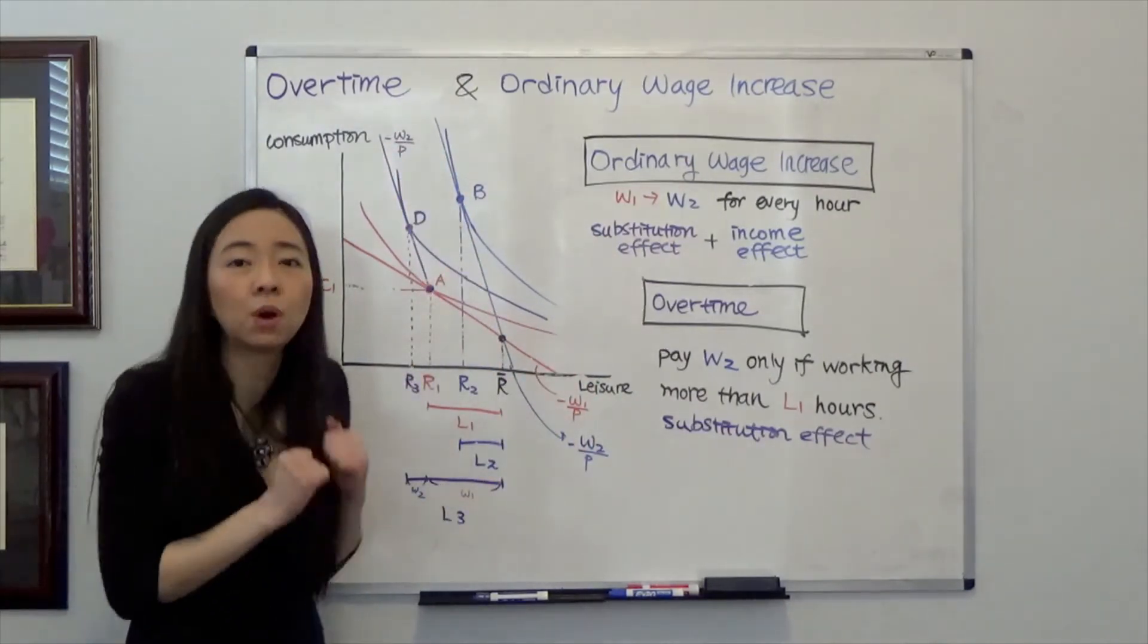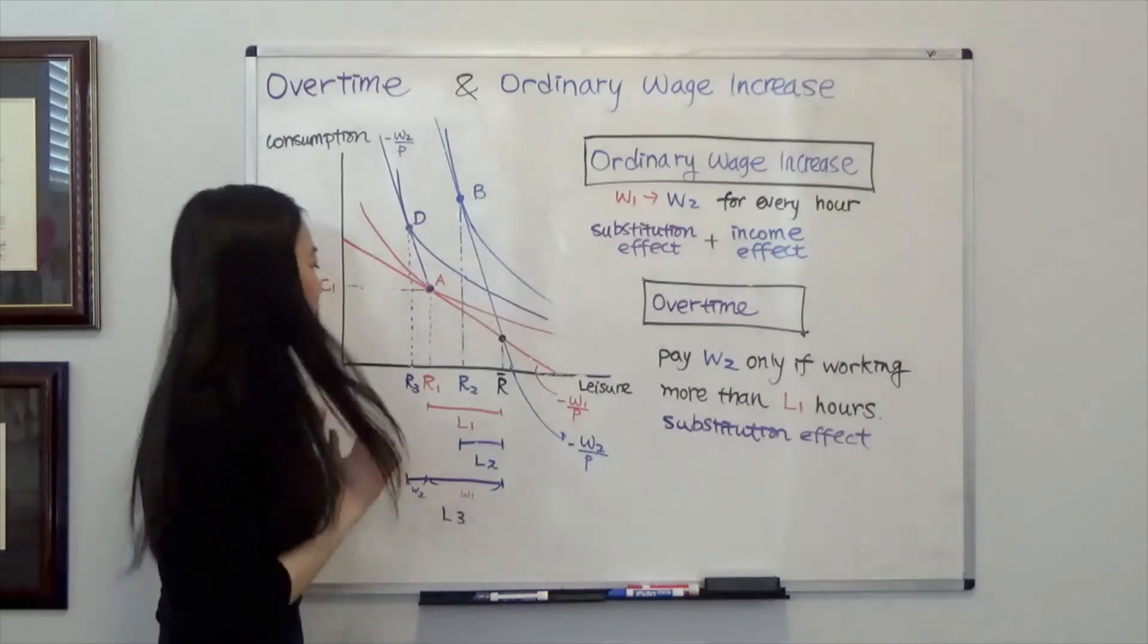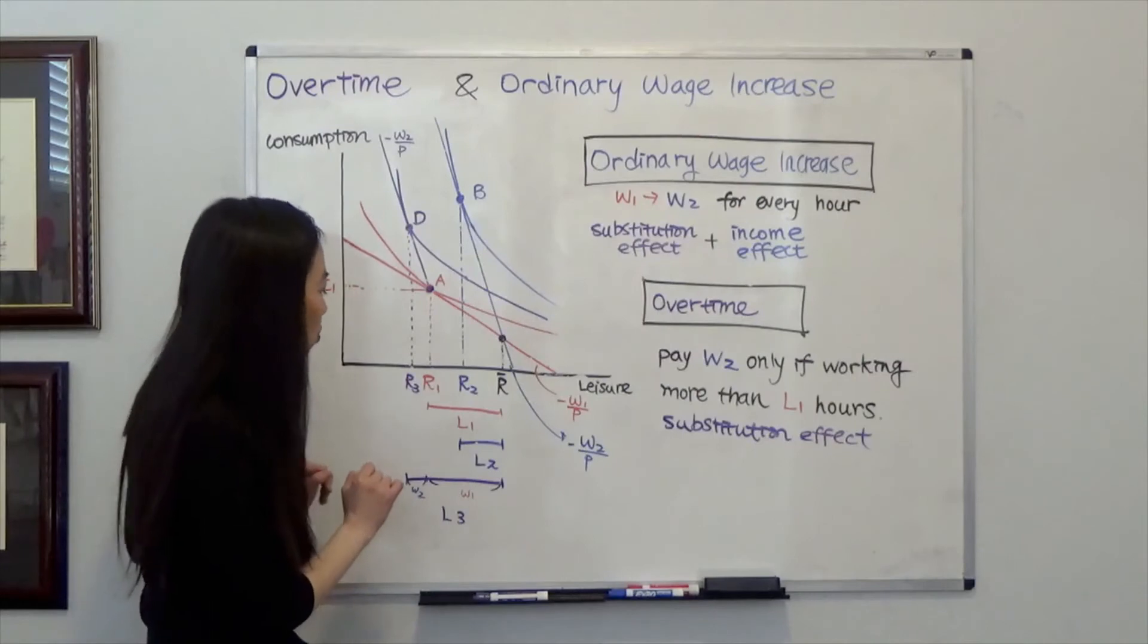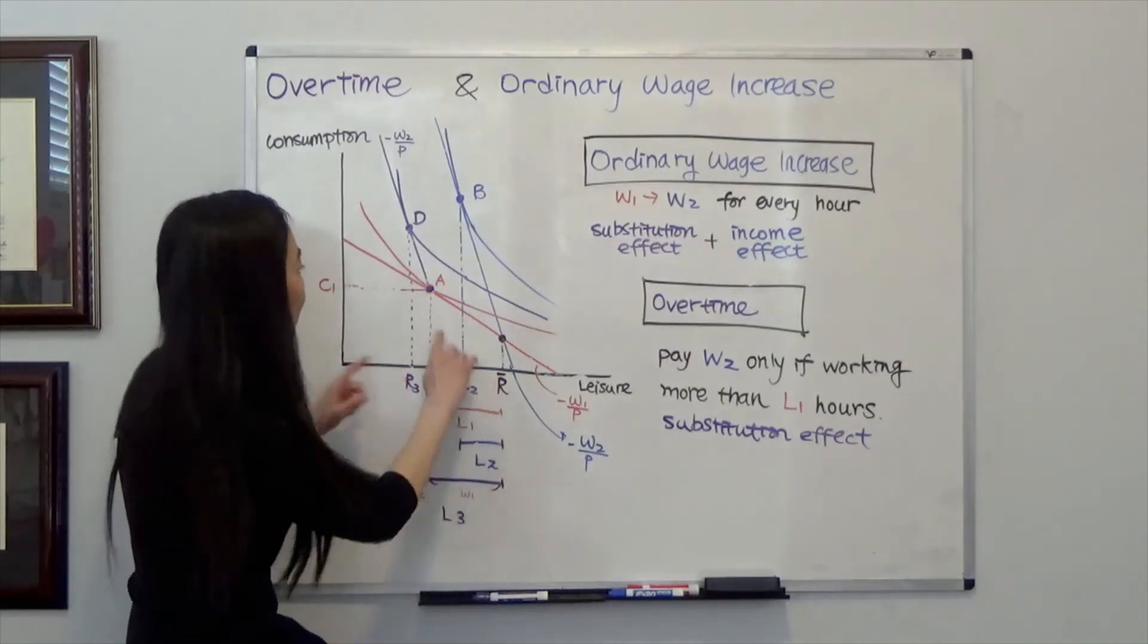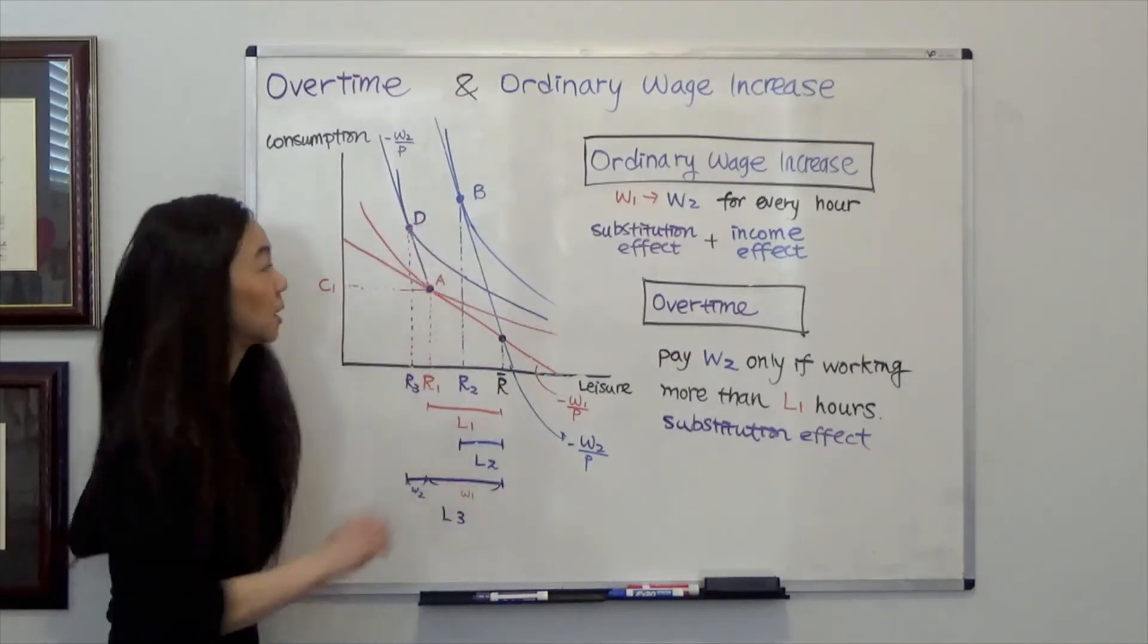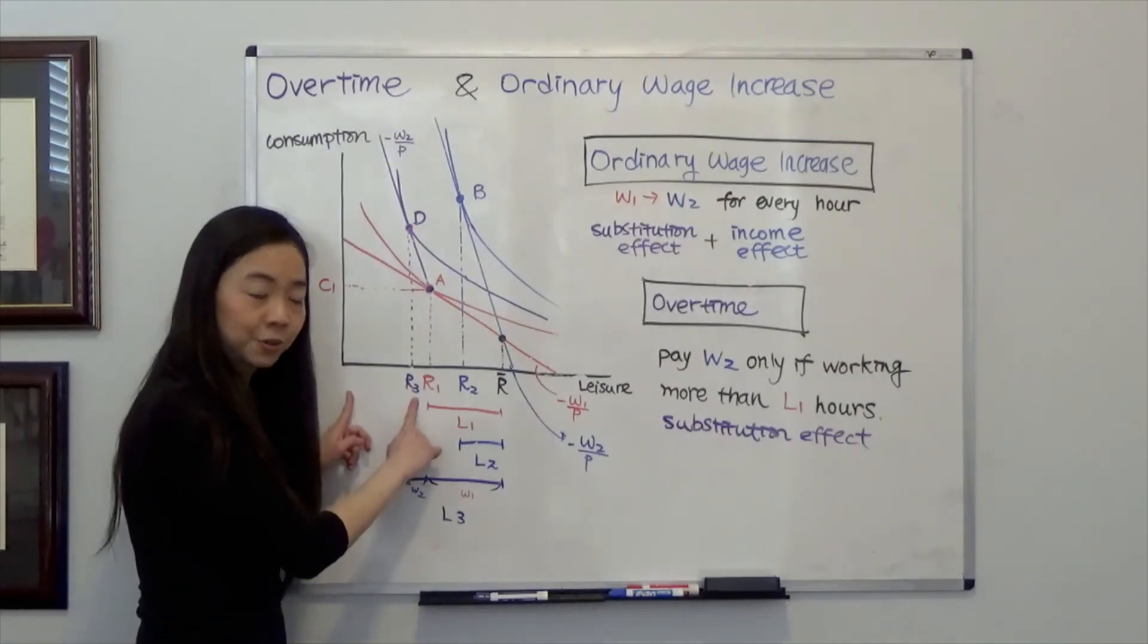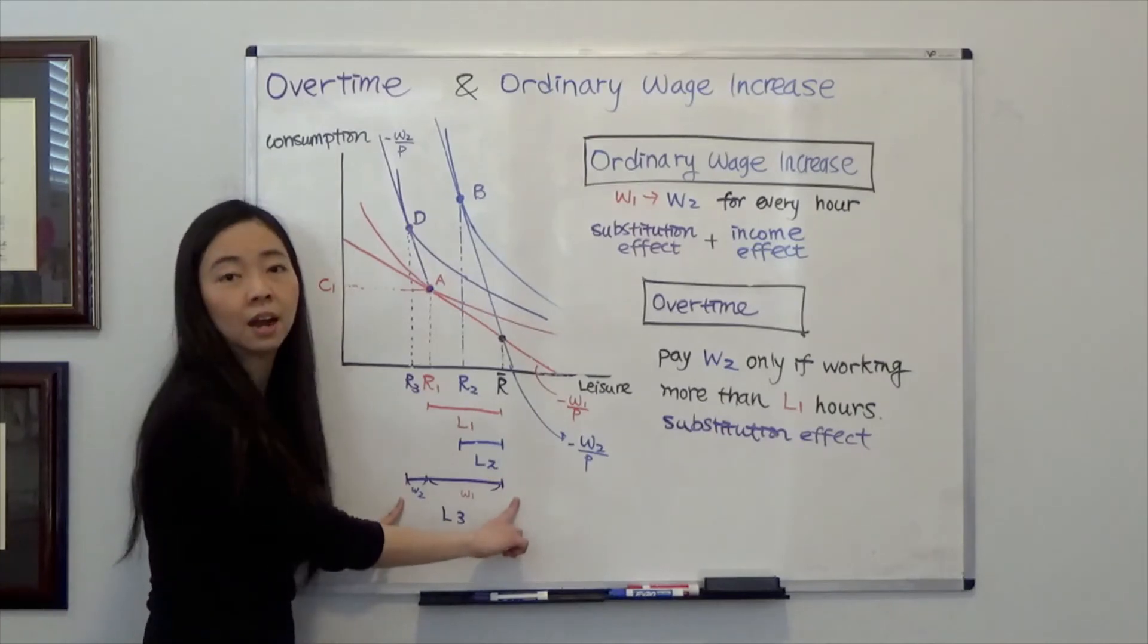So in this case, if I want to get a higher rate, I have to at least work for L1 hours. And in fact, I am going to work L3 hours. You can see that my new choice is at point D. And in this case, I leisure L3 hours and I work L3 hours.